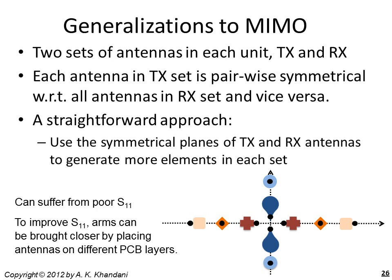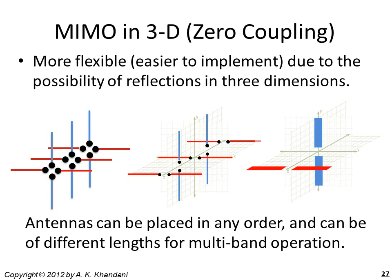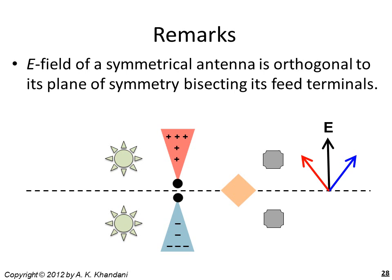The good news is that in three dimensions, we can find two sets of antennas such that every element in the first set (blue antennas) is pairwise symmetrical with every element in the second set (red antennas). On the other hand, many practical antenna systems are two-dimensional. A key observation leading to a 2D construction is that the electric field due to a symmetrical antenna will be orthogonal to its plane of symmetry.